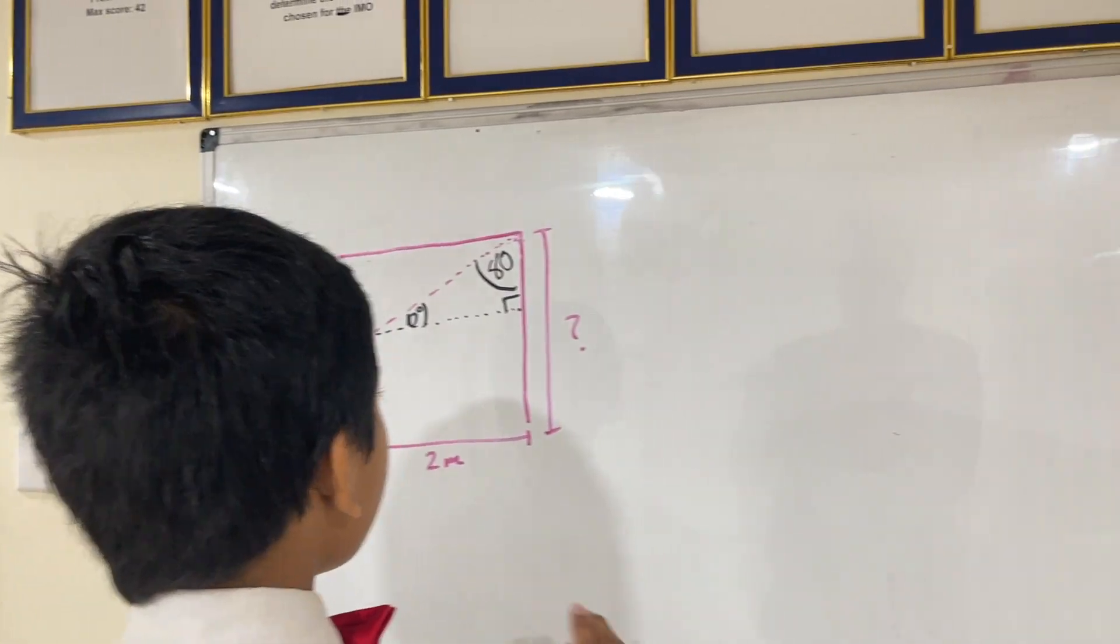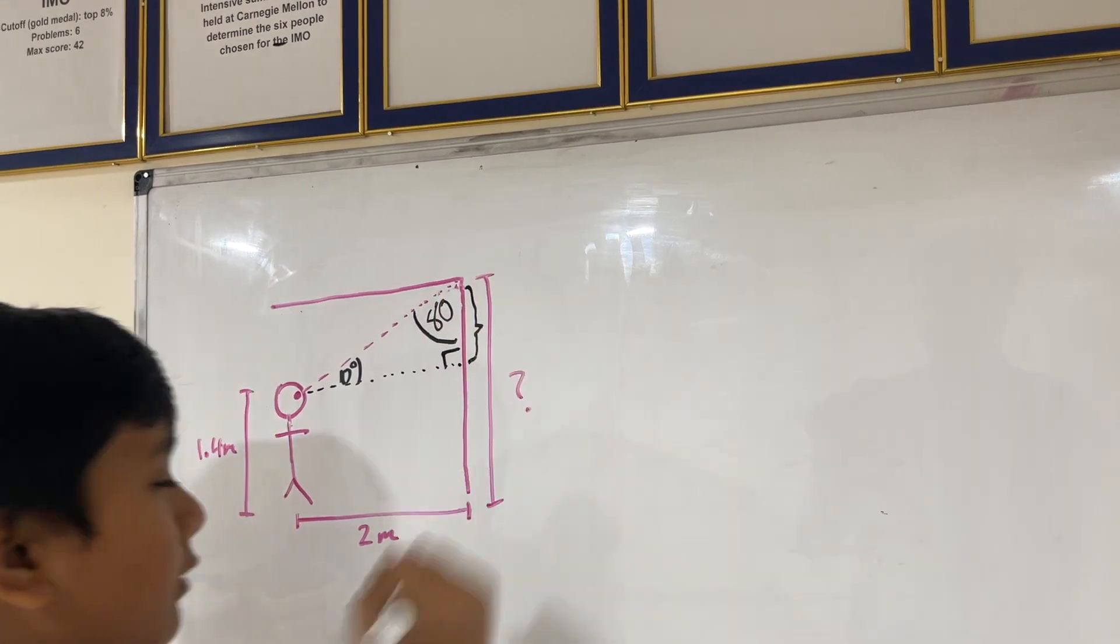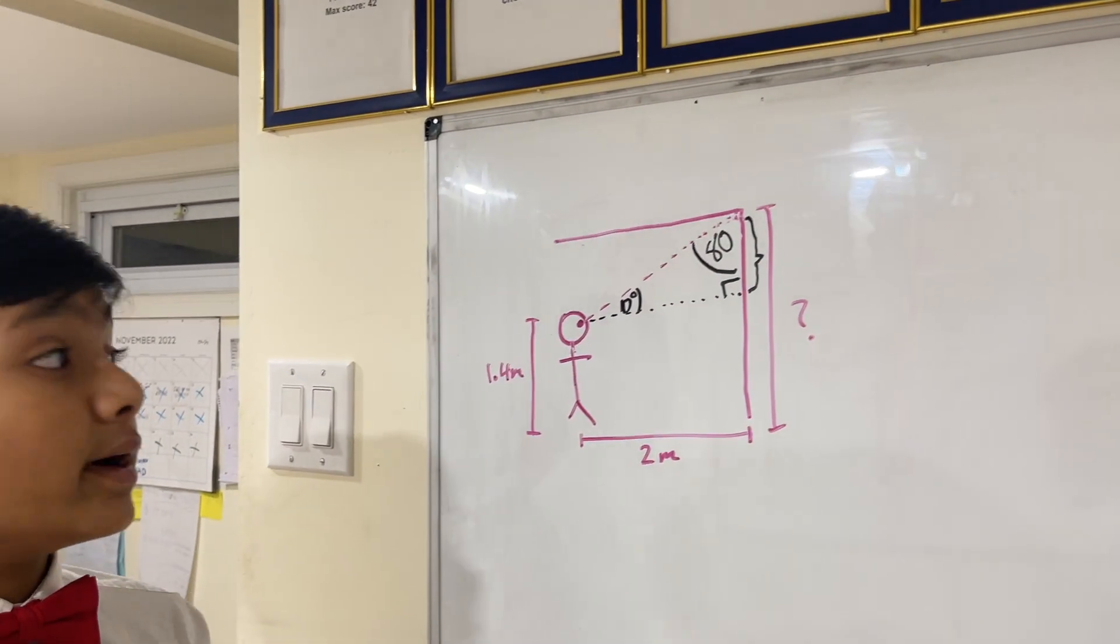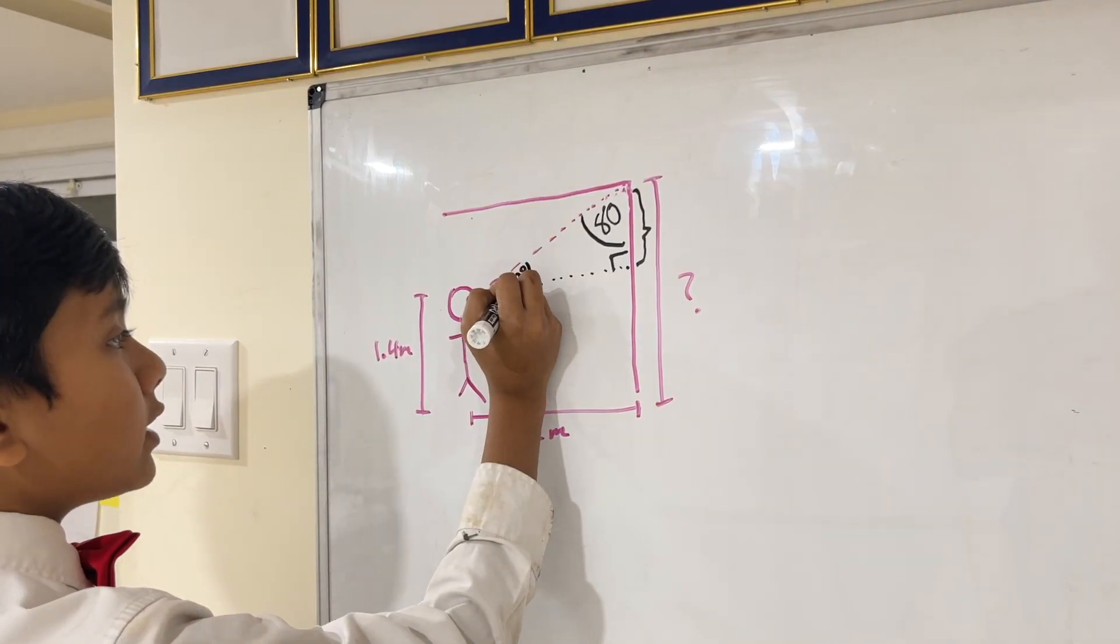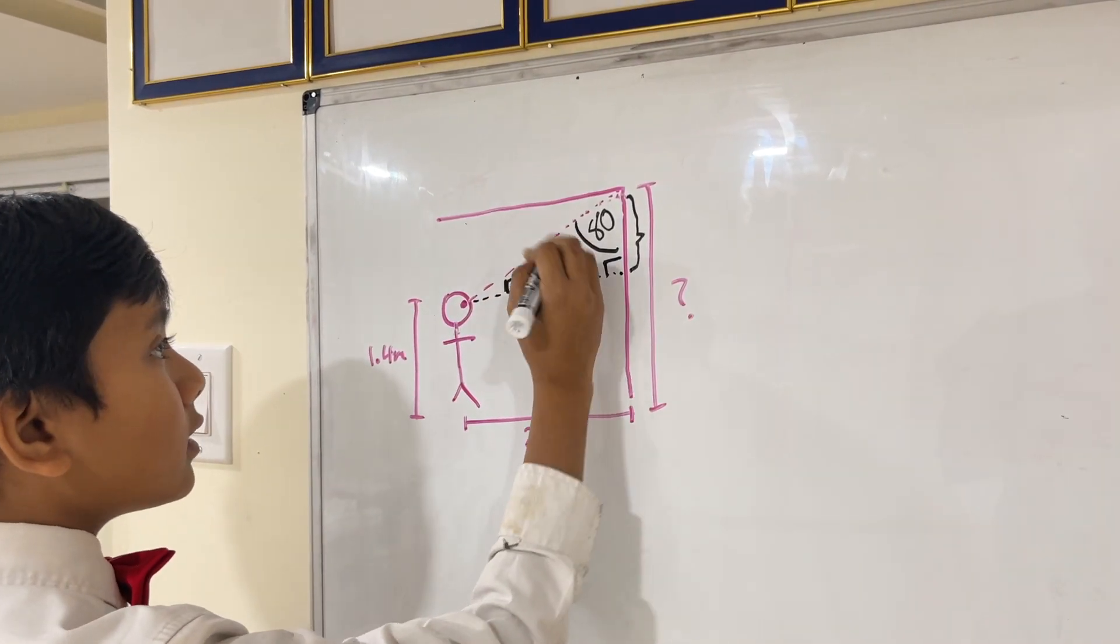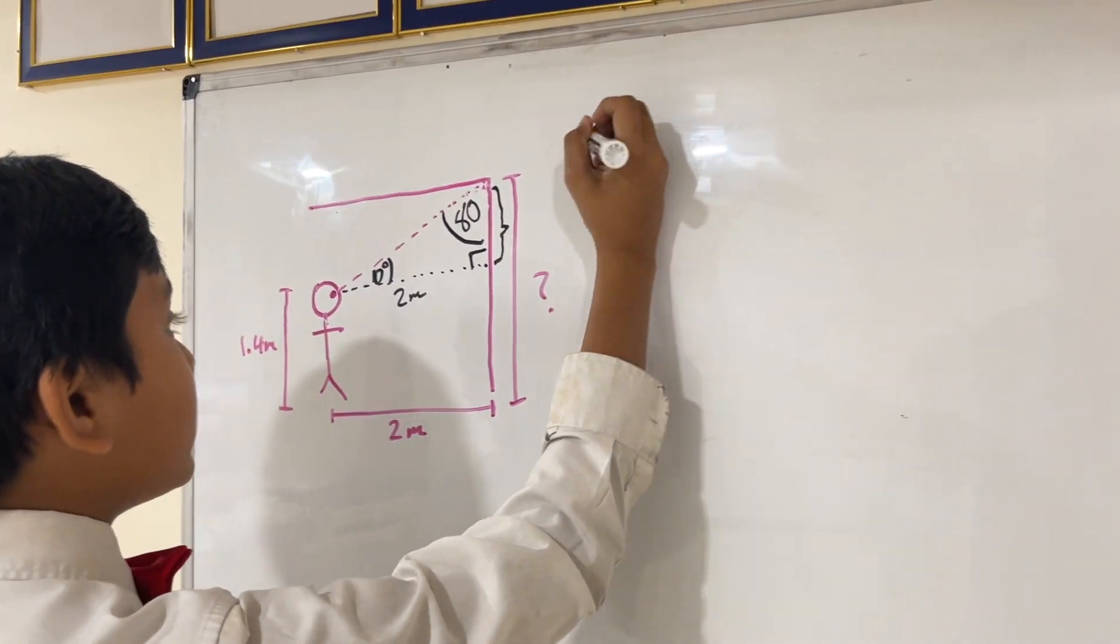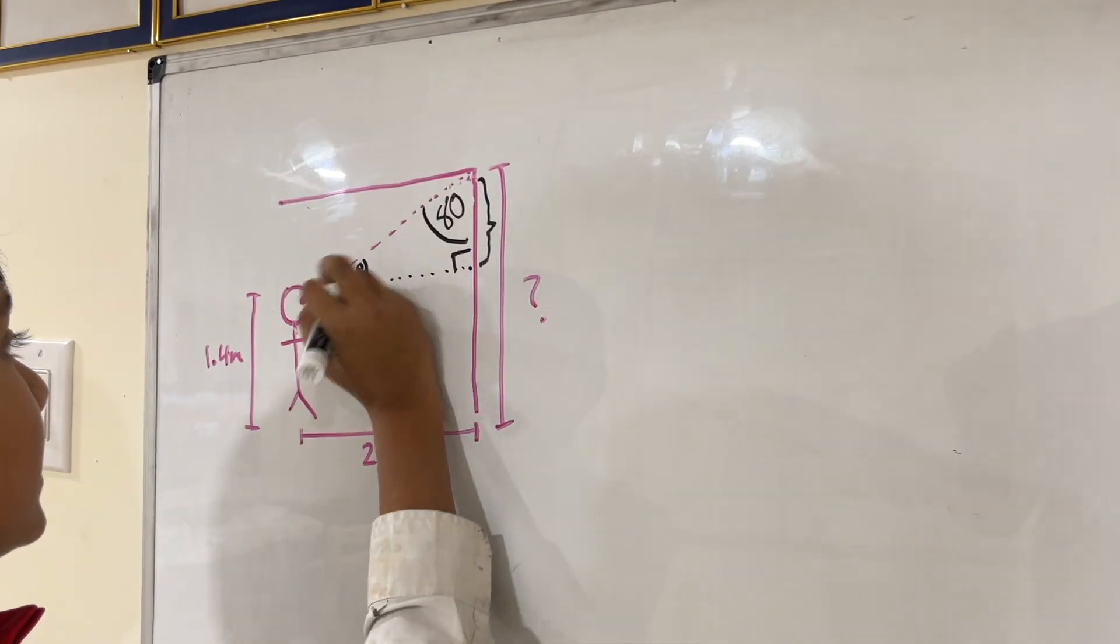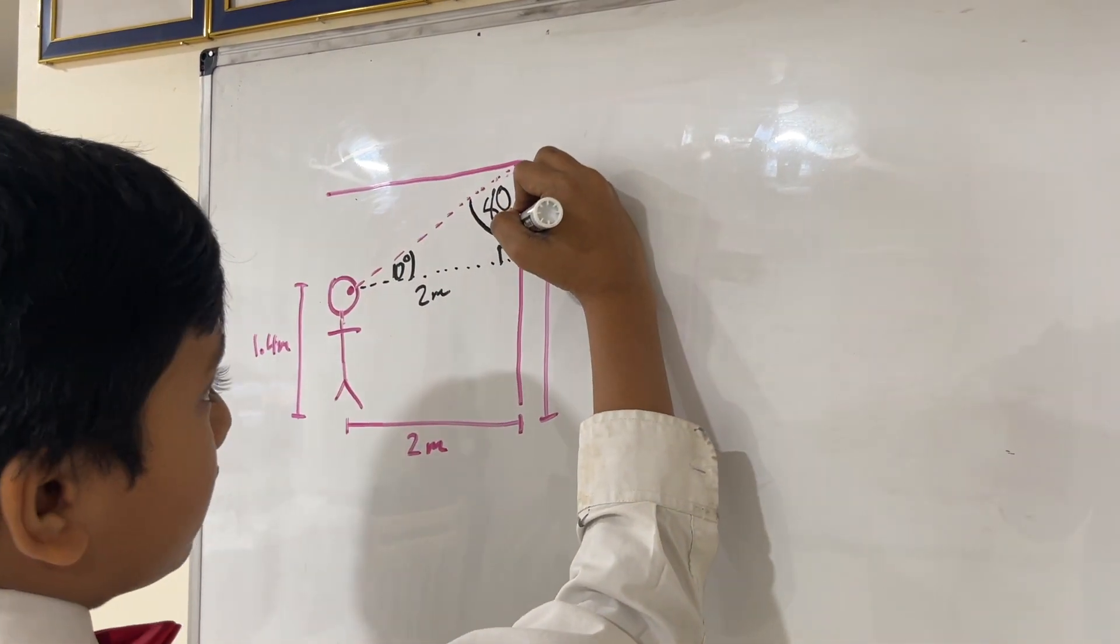So now, the thing is, when we calculate this height, we are going to get the real height of the wall minus 1.4, because you have to account for my height. So if you have 2 meters over here, we are going to find this. Well, this is adjacent to 10 degrees, and this is opposite to 10 degrees.